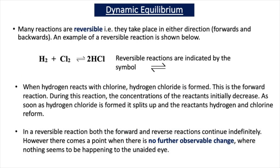At GCSE, AS and A-level, we've seen many reactions are reversible — they take place in either direction, both forwards and backwards. An example of a reversible reaction is hydrogen reacting with chlorine to form hydrogen chloride gas. Reversible reactions are identified by a special symbol. When hydrogen reacts with chlorine, we form hydrogen chloride — this is the forward reaction. During this reaction, the concentrations of the reactants will initially decrease, and as soon as hydrogen chloride is formed, it will split up and the reactants hydrogen and chlorine reform. In a reversible reaction, both the forward and reverse reactions continue indefinitely.